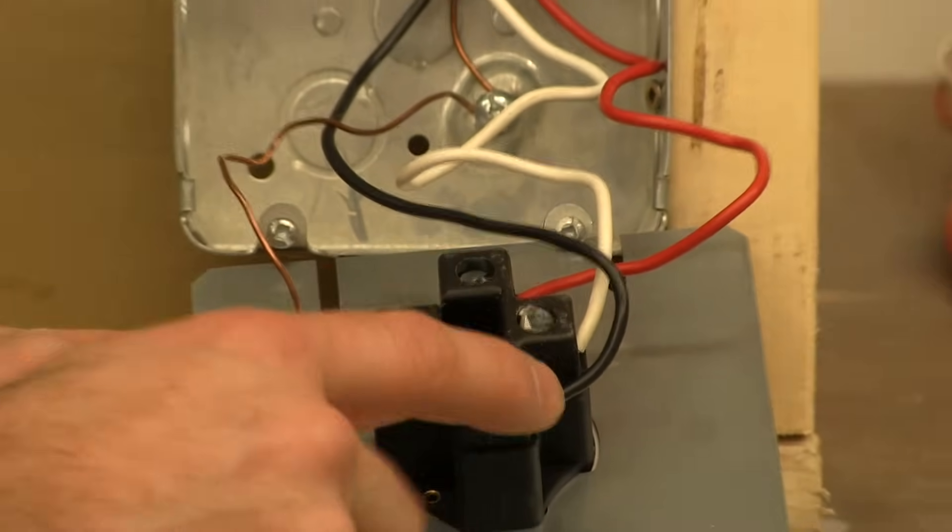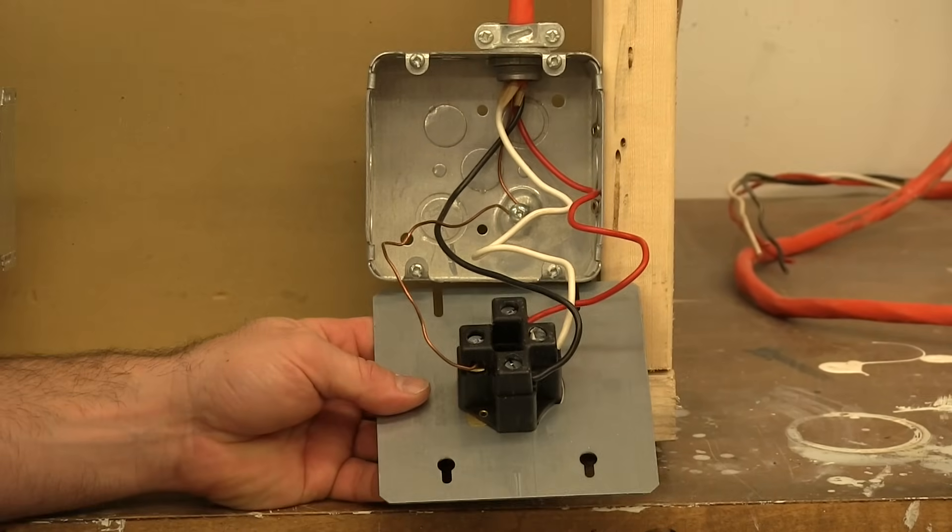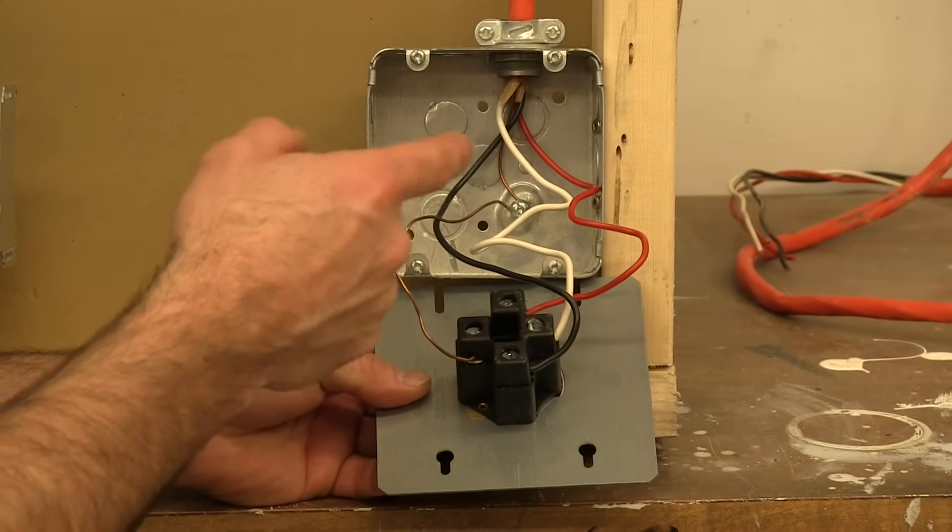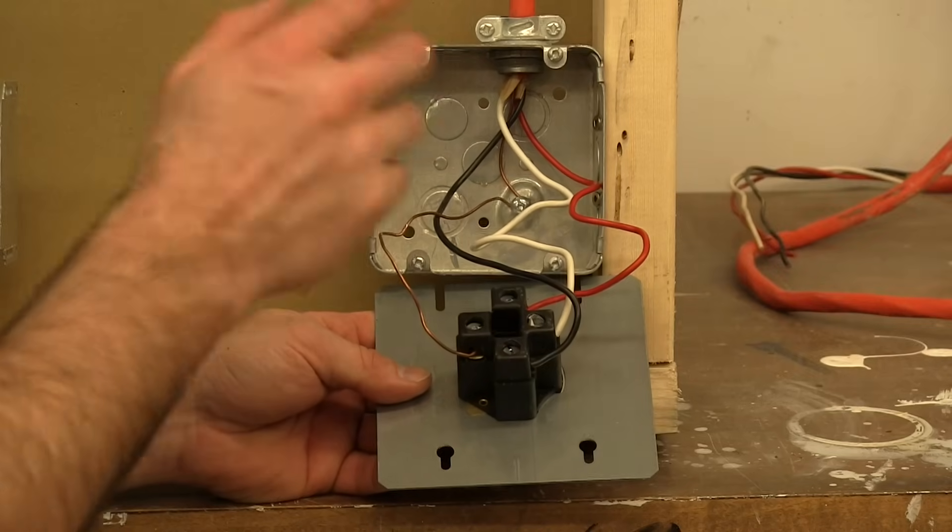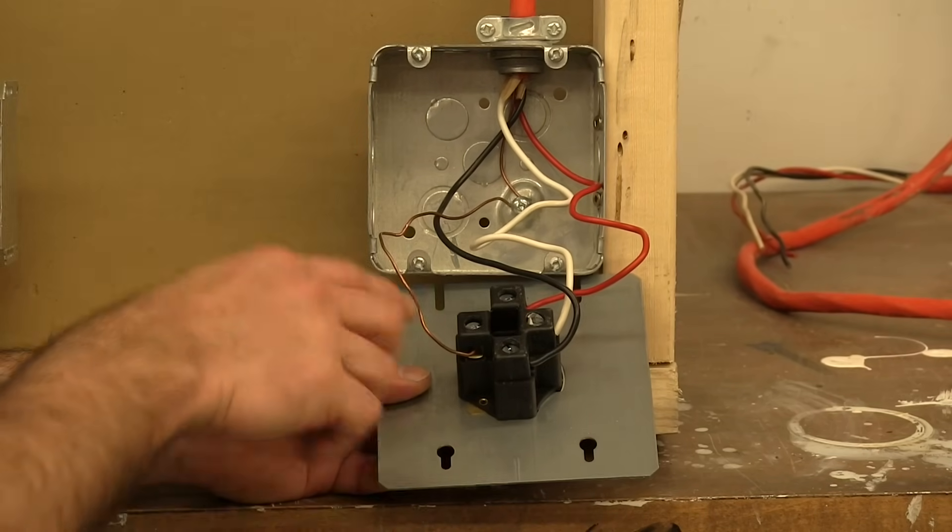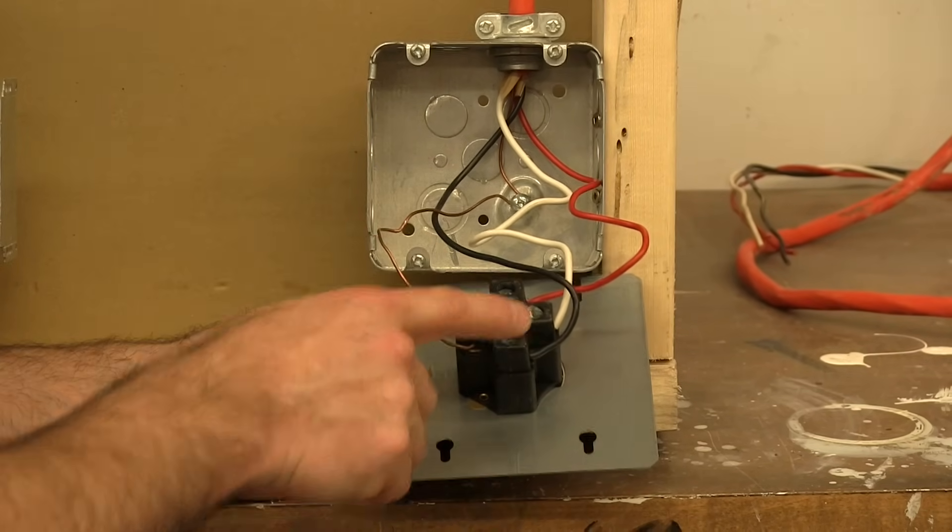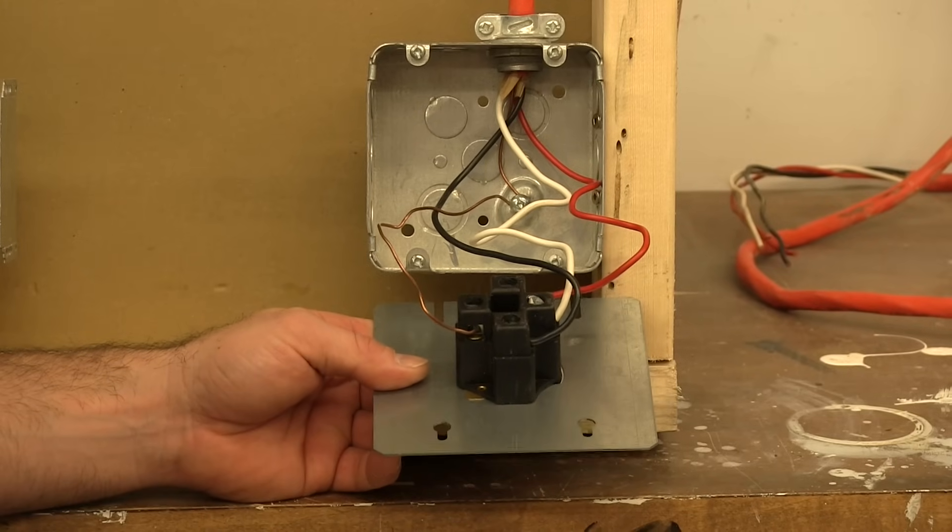Now for the two hot lines you're usually just going to have an X and a Y and simply it doesn't really matter whether you have the black on the right side or the red on the right side, doesn't matter as long as you've got one hot on one side and one hot on the other side, everything's going to work fine.